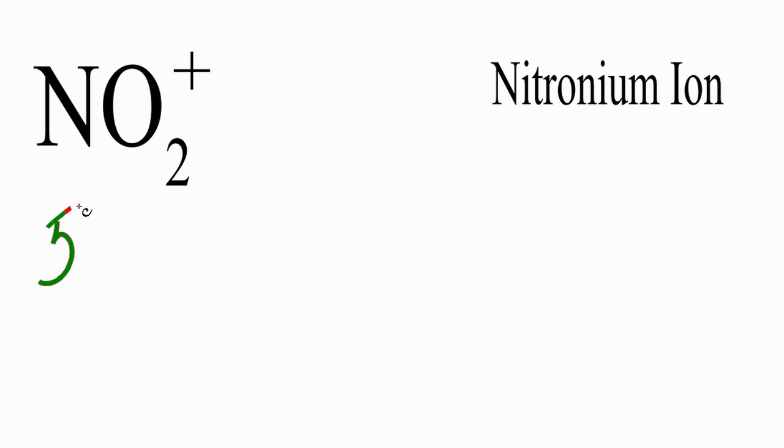For nitrogen, we have 5 plus oxygen, 6, but we have 2 oxygens, so we're going to multiply that times 2. And whenever you see a plus sign, this one means plus 1, you're going to subtract 1 valence electron. The plus means we've lost a valence electron, so we subtract 1, and that gives us 5 plus 12, that's 17, minus 1, 16 valence electrons for this NO2 plus Lewis structure.